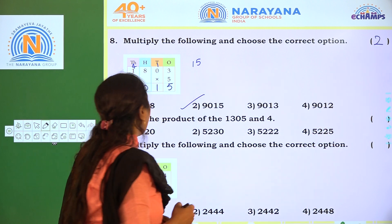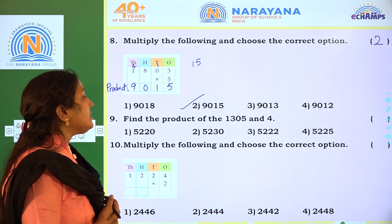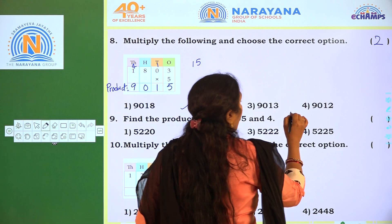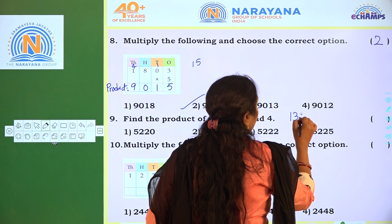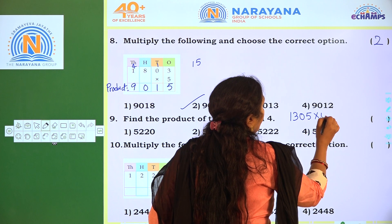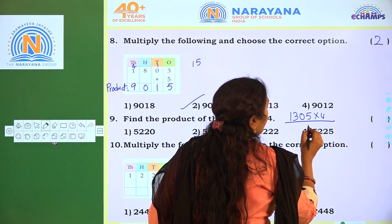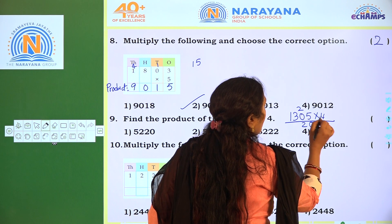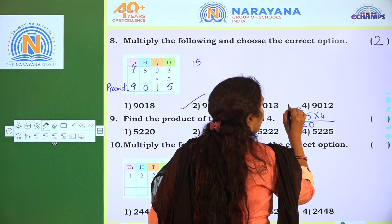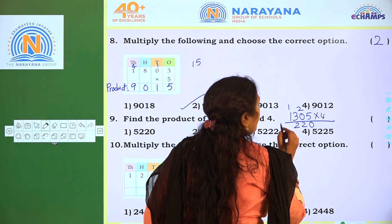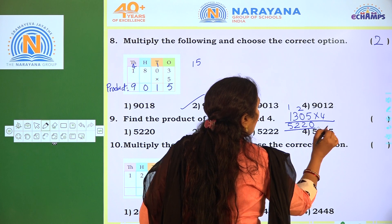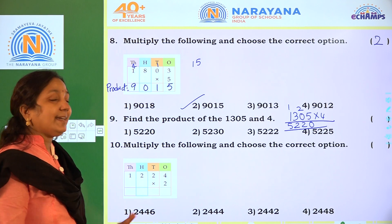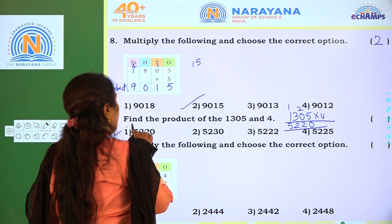Next: find the product of 1,305 and 4, that means 1,305 into 4. 4 5's are 20 — write 0, 2 regrouping. 4 0's are 0 plus 2 is 2. 4 3's are 12 — write 2, 1 regrouping. 4 plus 4 plus 1 is 5. The answer is 5,220 — option 1.